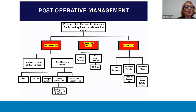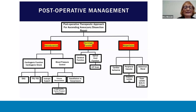Postoperative malperfusion is interrelated with hemodynamic and neurologic physiologic systems. For peripheral vascular malperfusion, as with preoperative assessment, there must be frequent neurovascular checks, Dopplers, lactate, and CK to assess for potential fasciotomy and to prevent rhabdomyolysis. Abdominal and renal ischemia must also be monitored with serial lactate, creatinine, and liver function tests to assess abdominal organ function.